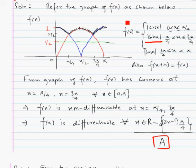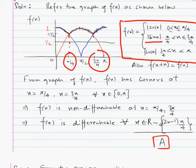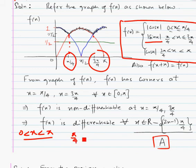Now we need to discuss the differentiability of f(x). We can see that f(x) possesses non-differentiability — corners in the graph — at x equal to π by 4 and at 3π by 4. So it is non-differentiable at π by 4 and 3π by 4. Between 0 and π, non-differentiability occurs at π by 4 and 3π by 4.